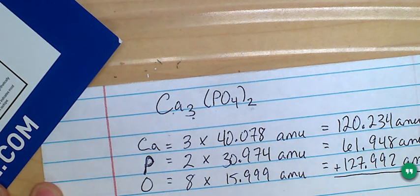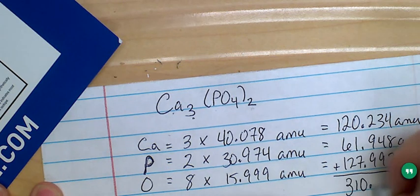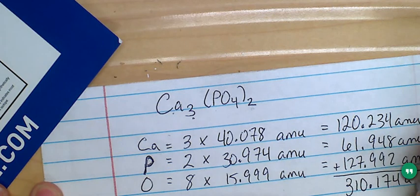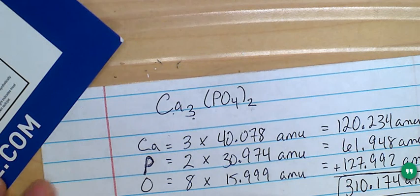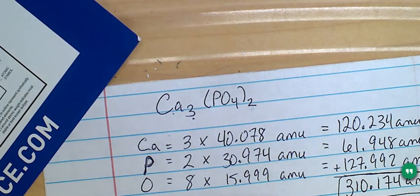So we're going to take 127.992 plus 61.948 plus 120.234 to give me a total of 310.174 atomic mass units. And that would be my final answer if I was asked to calculate the formula mass for this compound.